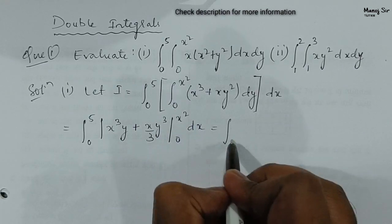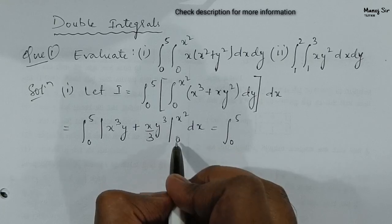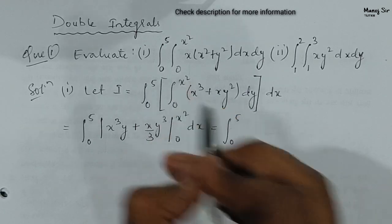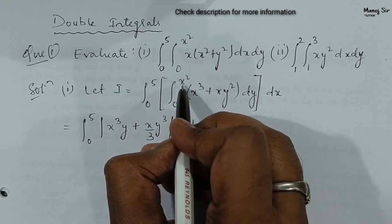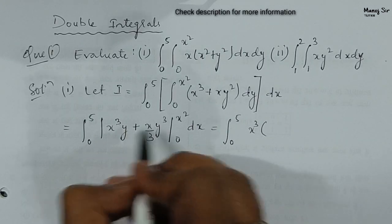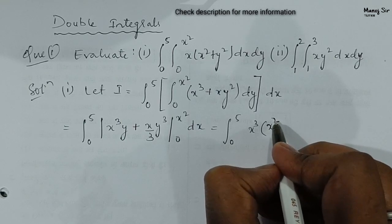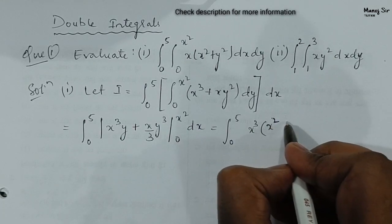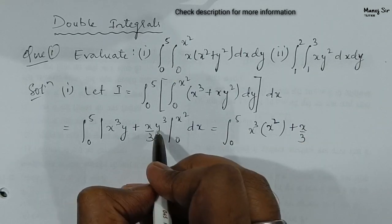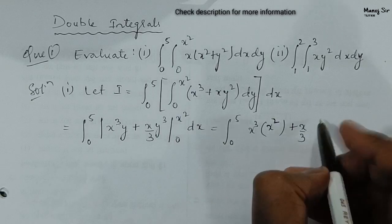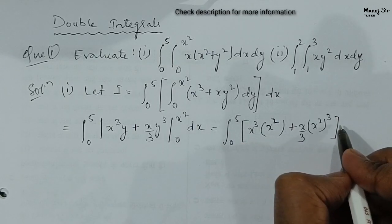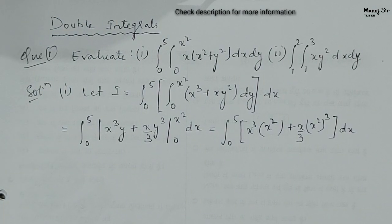In the next step, we apply the limits: integration zero to five. We put the limits from zero to x square in place of y. So x cube times y gives x cube times x square. In place of y we put x square as the upper limit; the lower limit is zero so we ignore that. For the second term, x upon three times y cube, in place of y we put x square, giving x square whole cube. We write dx.